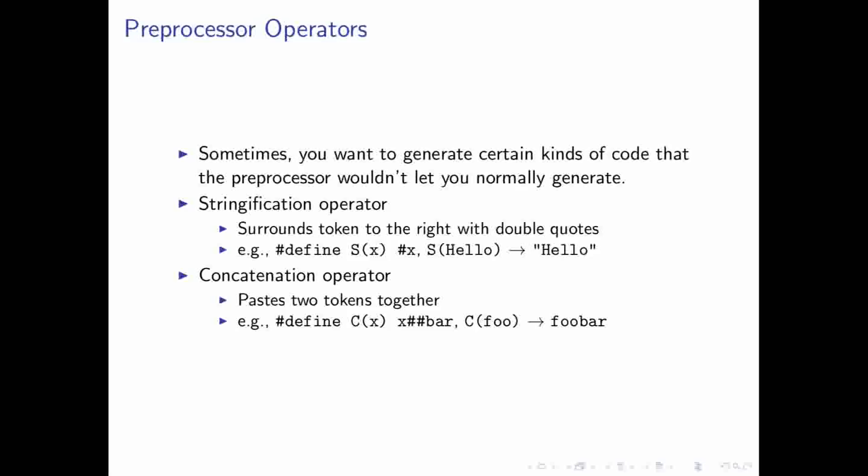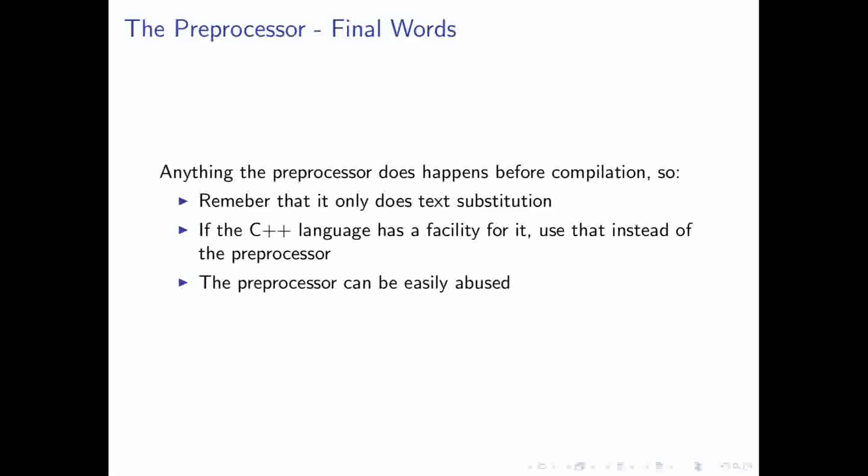And there are also operators that the preprocessor can utilize to help make producing certain kinds of output easier. So, we have two in particular. The stringification operator, which outputs two double quotes around the token that it's next to. And then there's a concatenation operator that takes two tokens and pastes them together end-to-end, as you can see in this example here.